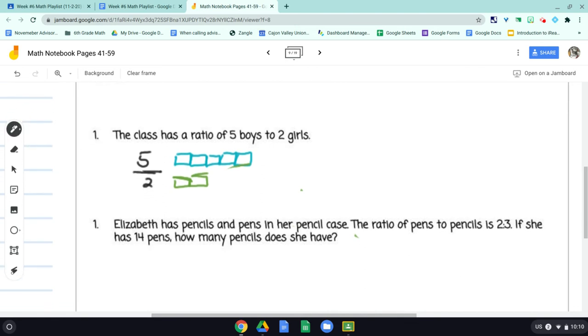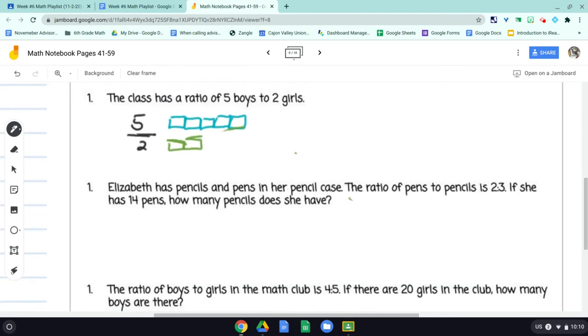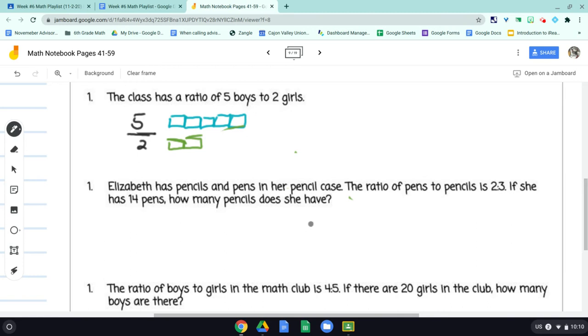And then finally, we have a couple problems. So we have the first problem here. Elizabeth has pencils and pens in her pencil case. The ratio of pens to pencils is 2 to 3. If she has 14 pens, how many pencils does she have?